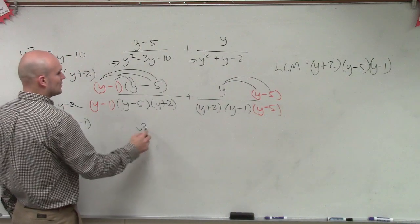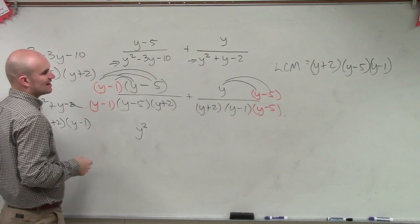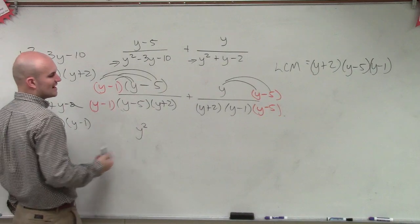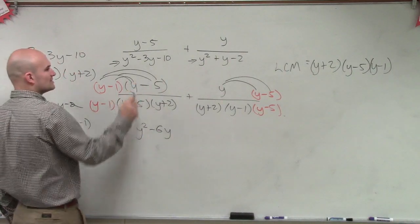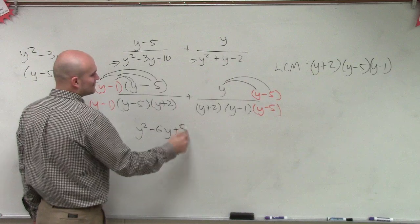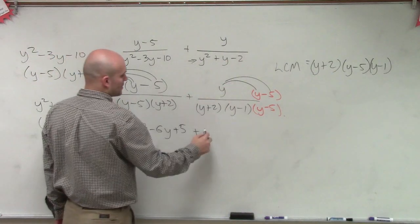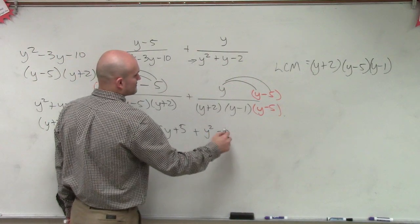y times y, y squared. y times negative 5 is negative 5y. y times negative 1 is negative 1y. So that becomes negative 6y. Negative 1 times negative 5 is a positive 5. Plus y times y is y squared minus y.